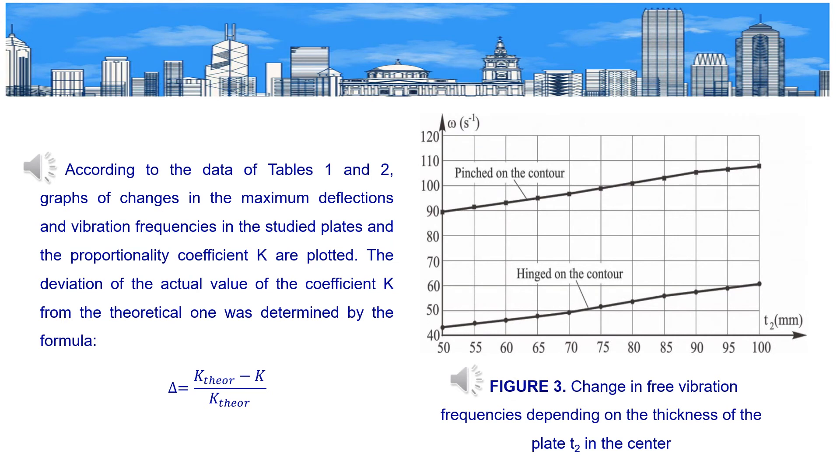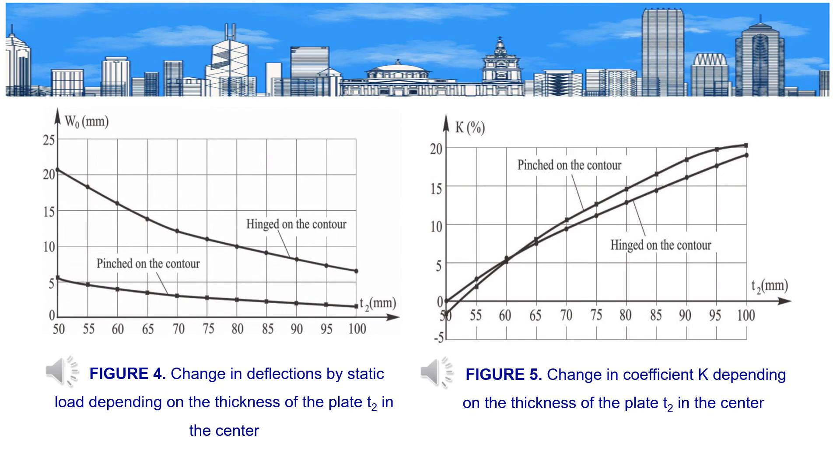According to the data of Tables 1 and 2, graphs of changes in the maximum deflections and vibration frequencies in the studied plates and the proportionality coefficient k are plotted. The deviation of the actual value of the coefficient k from the theoretical one was determined by the formula shown below. Figure 3 shows change in free vibration frequencies depending on the thickness of the plate T₂ in the center. Figure 4 shows change in deflection by static load depending on the thickness of the plate T₂ in the center. Figure 5 shows change in coefficient k depending on the thickness of the plate T₂ in the center.